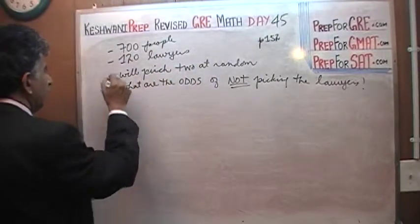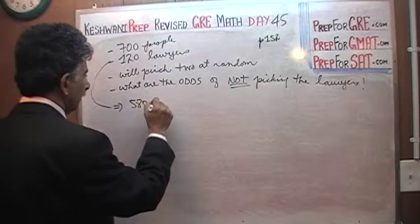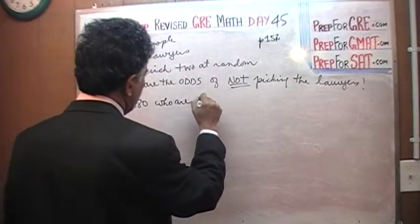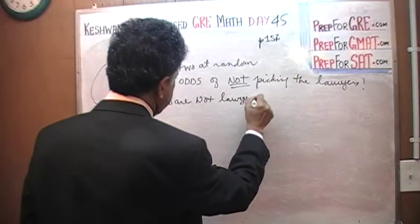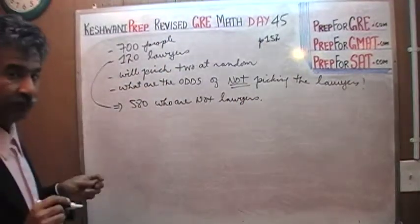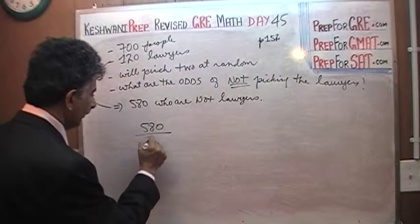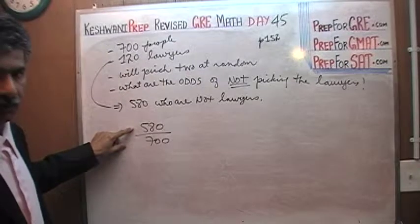If 120 of them are lawyers, then we have 580 people who are not lawyers. Therefore, the odds of picking the first person who is not a lawyer is 580 over 700, because there are 580 non-lawyers.